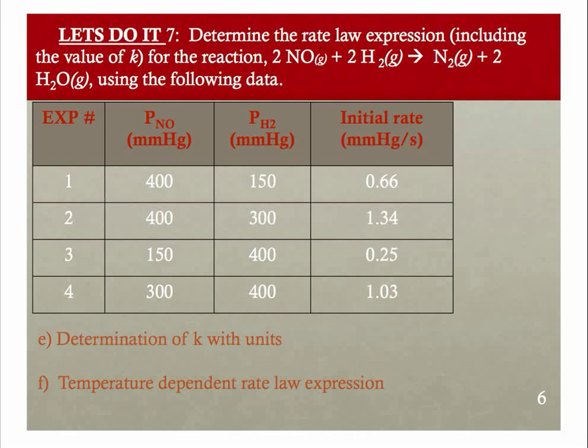The next step is to specify k, to determine k with units. In order to determine k, remember we have our rate is k times the partial pressure of NO squared times the partial pressure of H2. We are evaluating four experiments, and these experiments were performed at a constant temperature. That was a control variable, not an independent or dependent variable. If t is constant, then k is constant for a given reaction, and that means we can use any one of these experiments to calculate k.